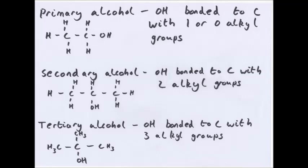This can also apply to halogenoalkanes, so you can have primary halogenoalkanes when the halogen is bonded to a carbon with one or zero alkyl groups. So you get the idea.